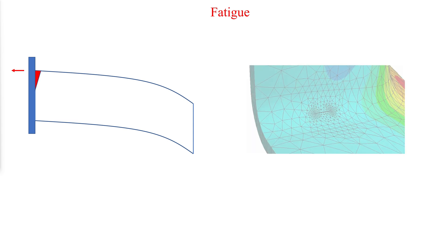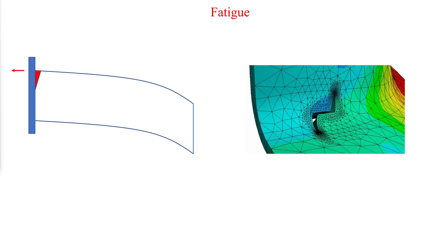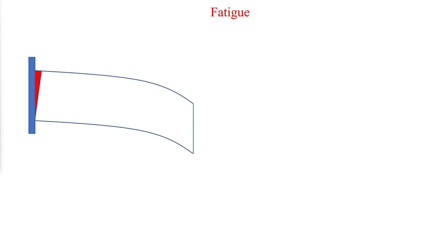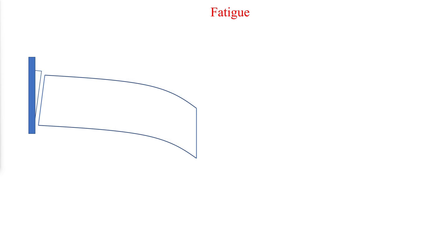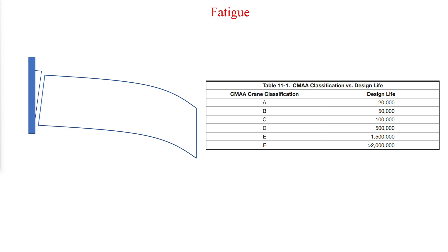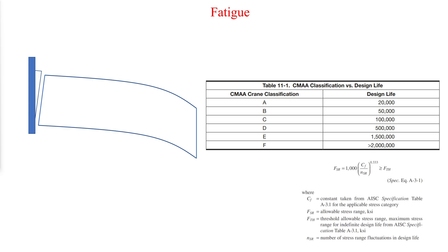the plastic strain in the small plastic region advances until the material separates and the crack advances. At that point, the plastic stress region moves to the new tip of the crack and the process repeats itself. Eventually, the crack size becomes large enough that the combined effect of the crack size and the applied stress exceed the toughness of the material, and a final fracture occurs. Table 11-1 provides estimates of the number of cycles of full uniform amplitude for CMAA crane classifications A through F over a 40-year period. The number of expected cycles in the design life shall be used in equation A-3-1 of the AISC specifications to determine the allowable stress range, which the average stress range must not exceed.